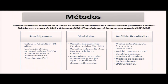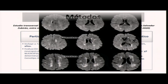Como variables independientes estudiamos las escalas visuales Fazekas, Scheltens y Koedam. Como covariables estudiamos el género, la edad, la escolaridad y la presencia o no de apolipoproteína. Realizamos estadística descriptiva e incluso modelos de regresión binaria.